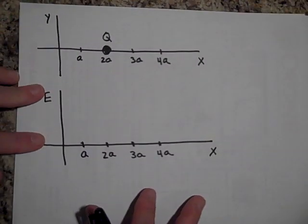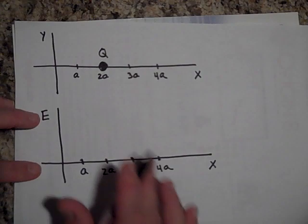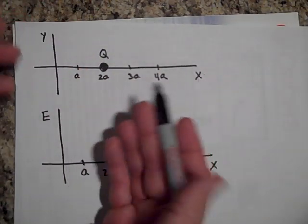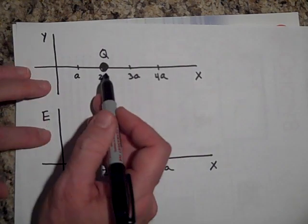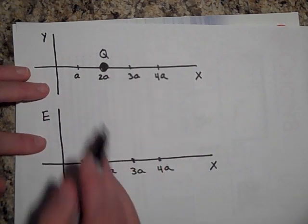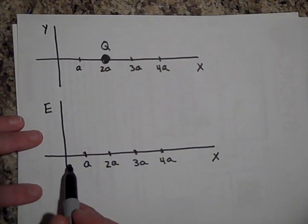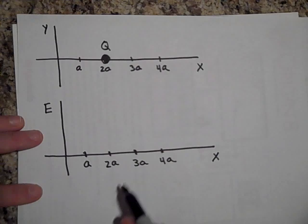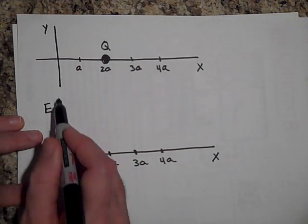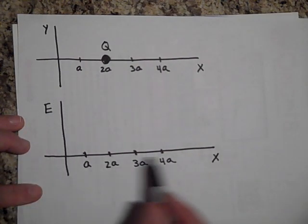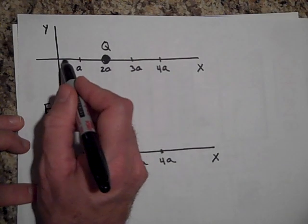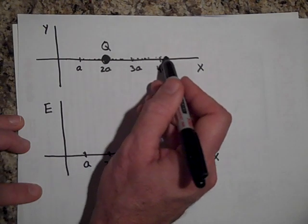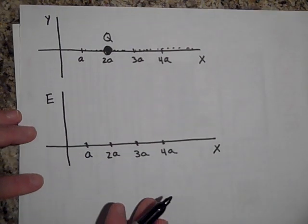All right next one. Okay, we have a positive charge in this region of space, an x and y coordinate system. So this is a space, a region of space, and this is the charge q. It's at 2a. And I'd like you to try and graph what the electric field looks like just on the x-axis. So I want you to graph E versus x. So we just want to know if you move around here, what does the electric field on this axis look like? Go ahead and graph that.